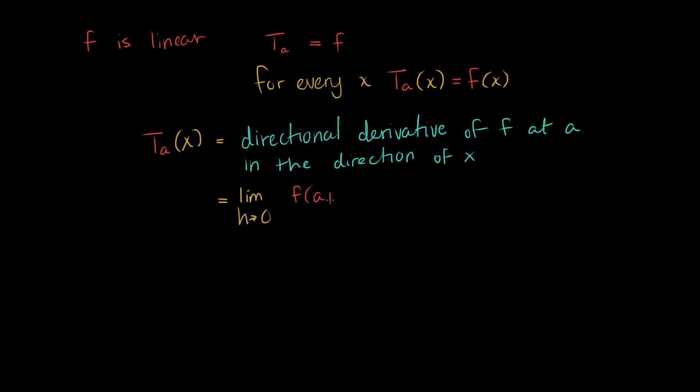F of a plus h times x, here we have, we're starting at a, and we're going out a little bit in the direction of F, minus just F of a, and we can divide all of this by h. And, what do we do with this? Is it just the definition of the directional derivative?